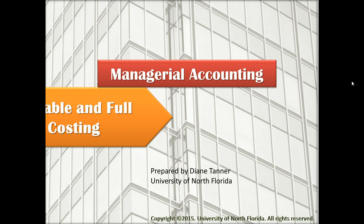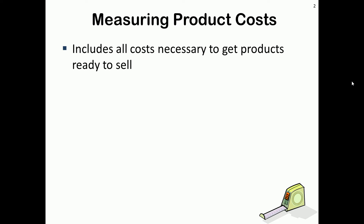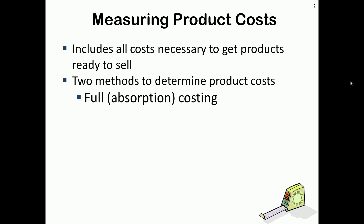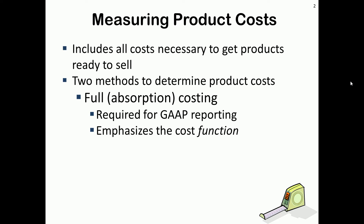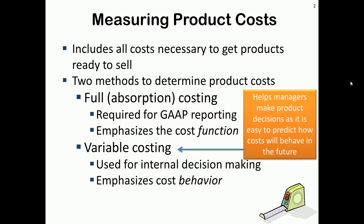This chapter will cover variable costing and full costing. These are two methods of determining which costs will be included as product cost and which costs will be included as period cost. We know that inventory includes all costs necessary to get products ready to sell. Full absorption costing is required for GAAP reporting — we typically refer to this as full costing — and it emphasizes the cost function, meaning product versus period. Variable costing is used for internal decision making and emphasizes cost behavior, fixed versus variable. The variable costing method helps managers make product decisions, as it is easy to predict how costs will behave in the future.